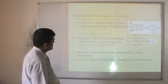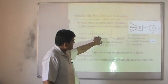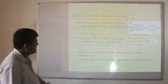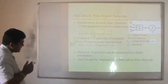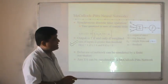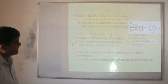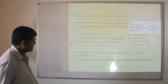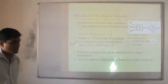The McCulloch-Pitts model has synchronous discrete time operations, with time quantized in units of synaptic delay. The output is 1 if and only if the weighted sum of the inputs is greater than the threshold — this is the most important point. The net input beyond the threshold causes the neuron to fire. The behavior of the network can be simulated by a finite automaton, and any finite automaton can be simulated by the McCulloch-Pitts neuron model.